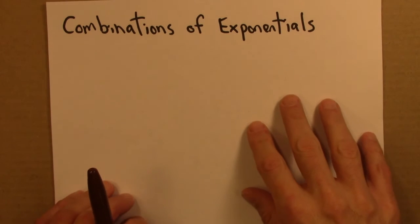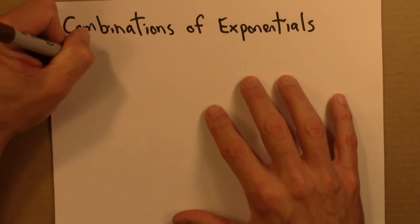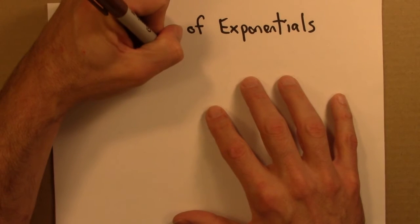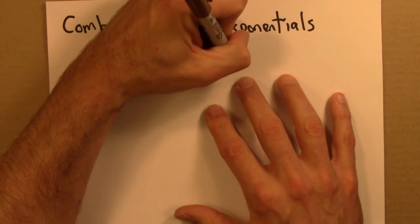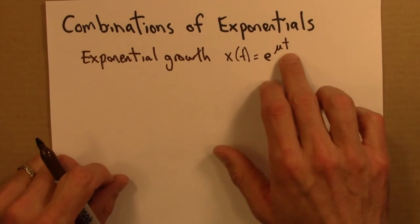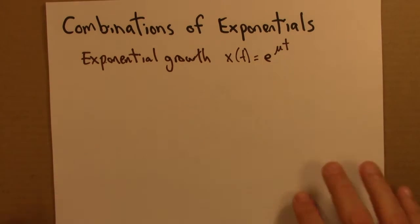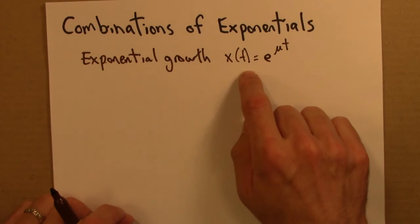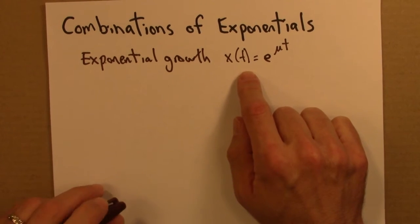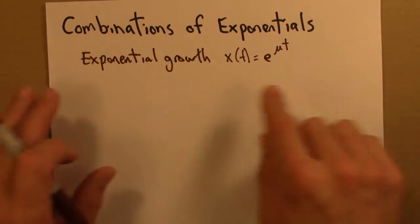Let me write some equations to accompany the story I just told. Suppose we have some quantity that grows exponentially — we've got exponential growth. We'll call that quantity x, and it grows like x = e^(μt), where μ is some parameter that tells us how fast it's growing. These could be the number of pages on a website, the number of files on a computer, the number of genes in a gene family, or the height of piles growing on my desk.